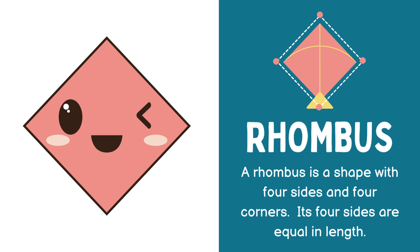Rhombus. A rhombus is a shape with four sides and four corners. Its four sides are equal in length.